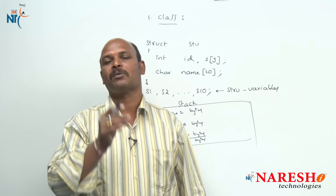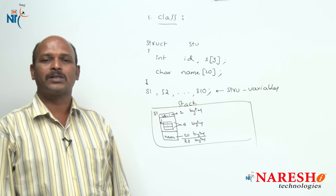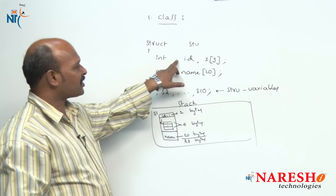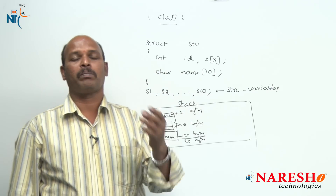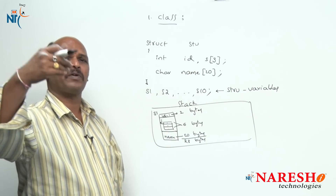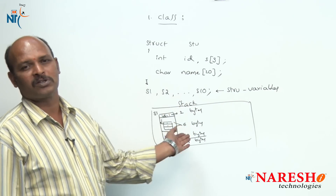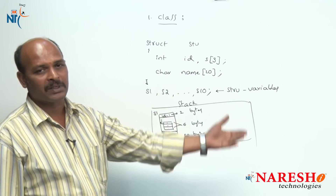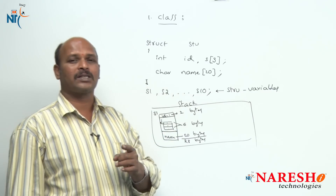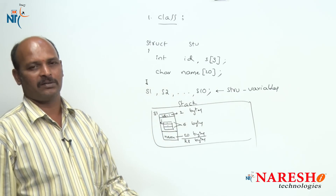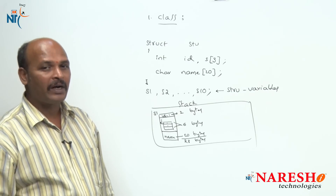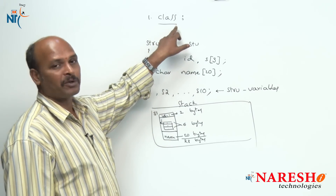What is the problem with structure? We are going to discuss the disadvantage of structure. The problem is in C language the structure data is by default public — it is the main problem. The structure data is accessible from anywhere in our program through structure variables, meaning outside members, other functions — anybody can access the structure data. That is why structure data is not protected, because structure members are public by default. To avoid this problem they introduced the concept of a class.